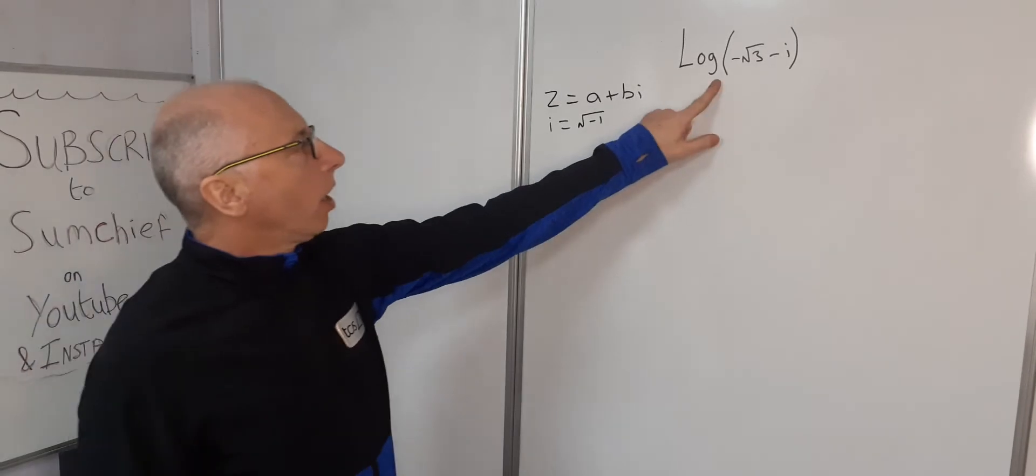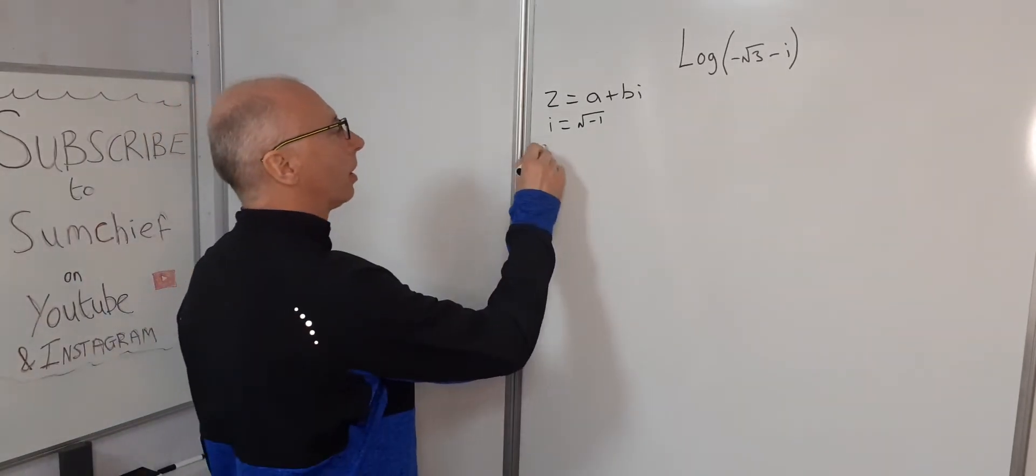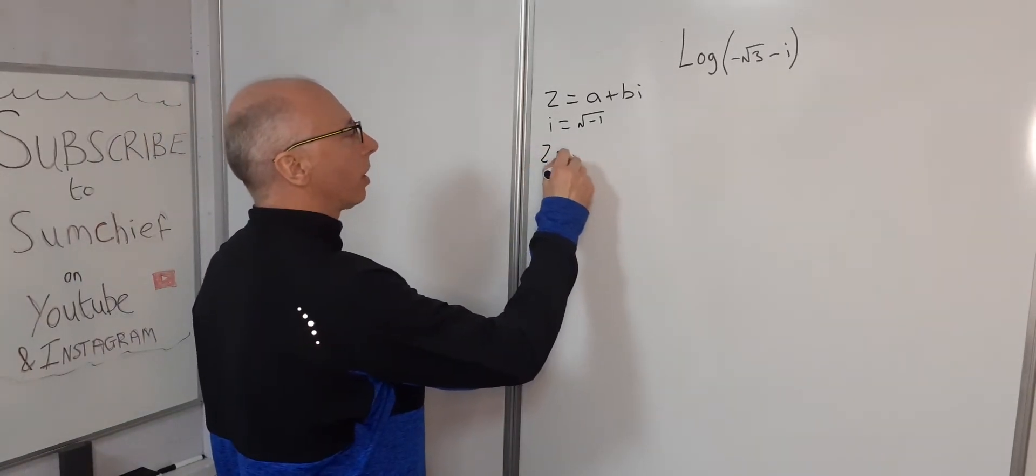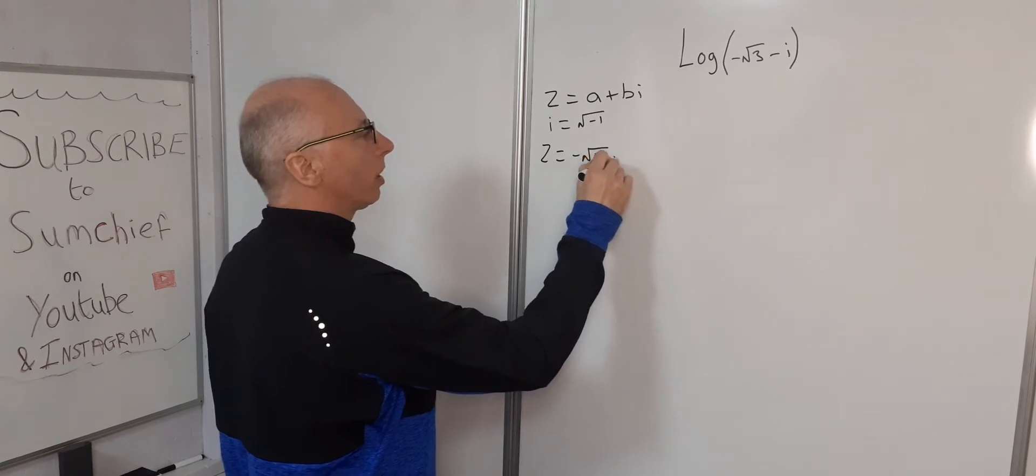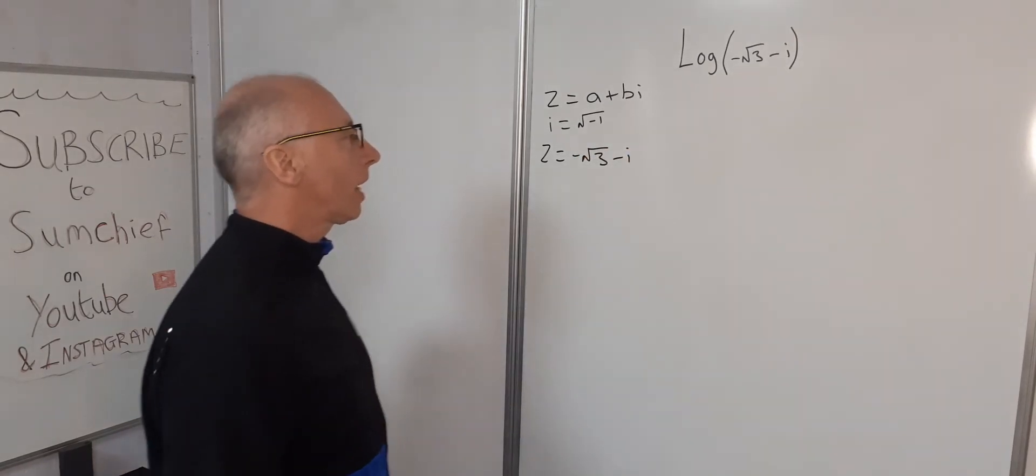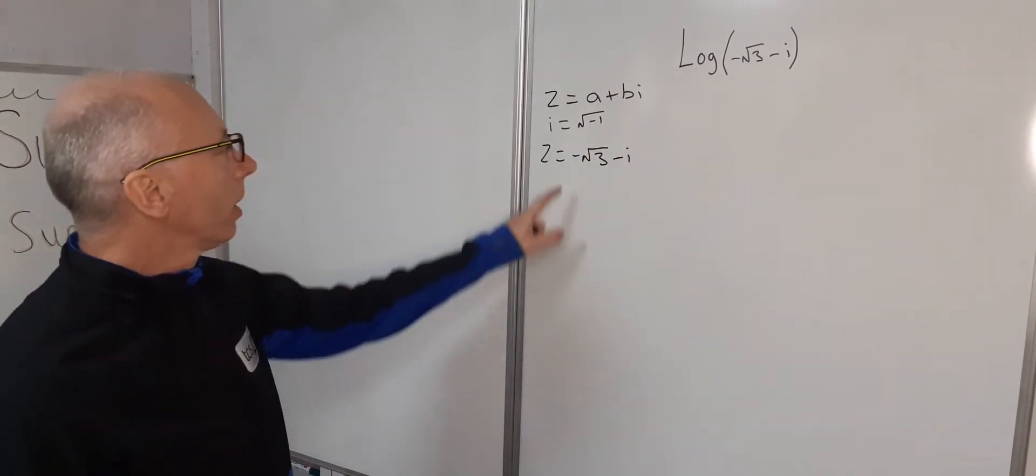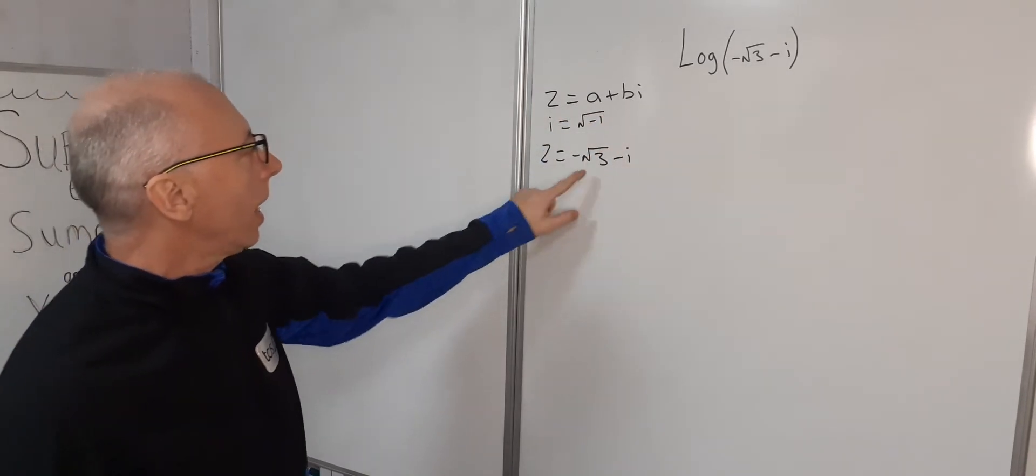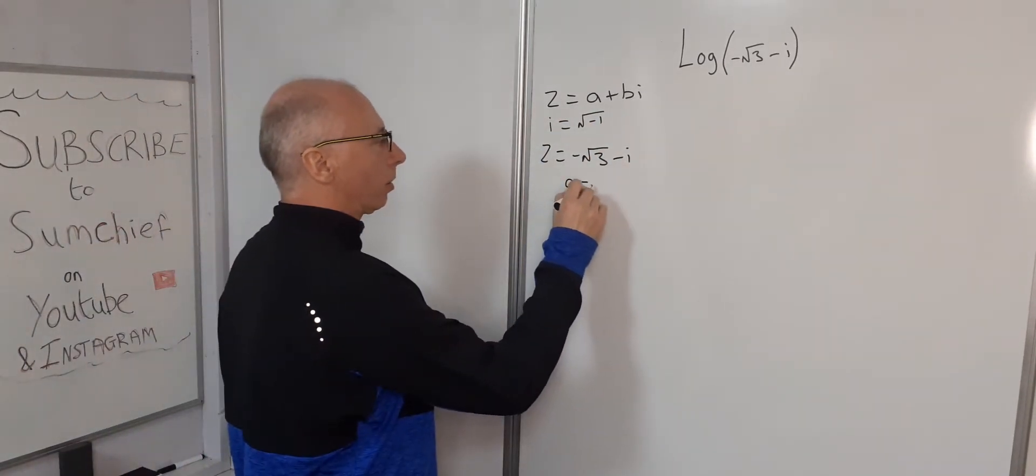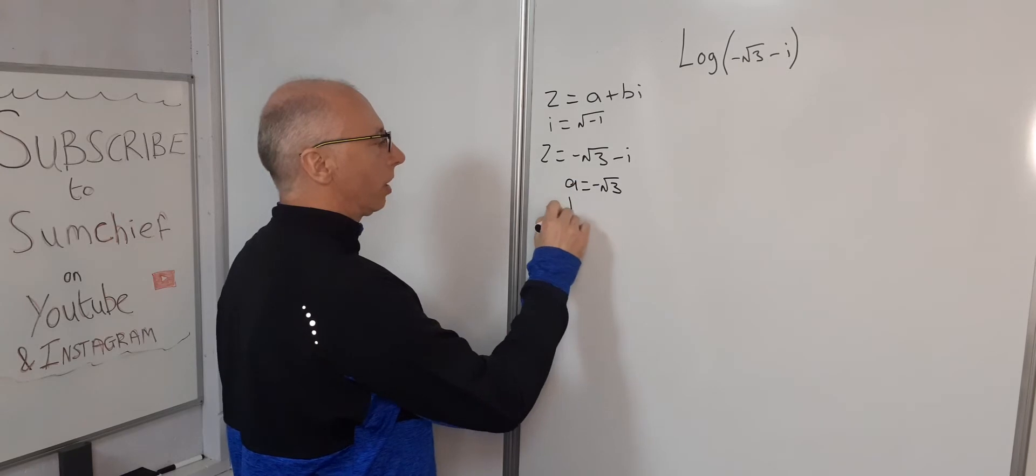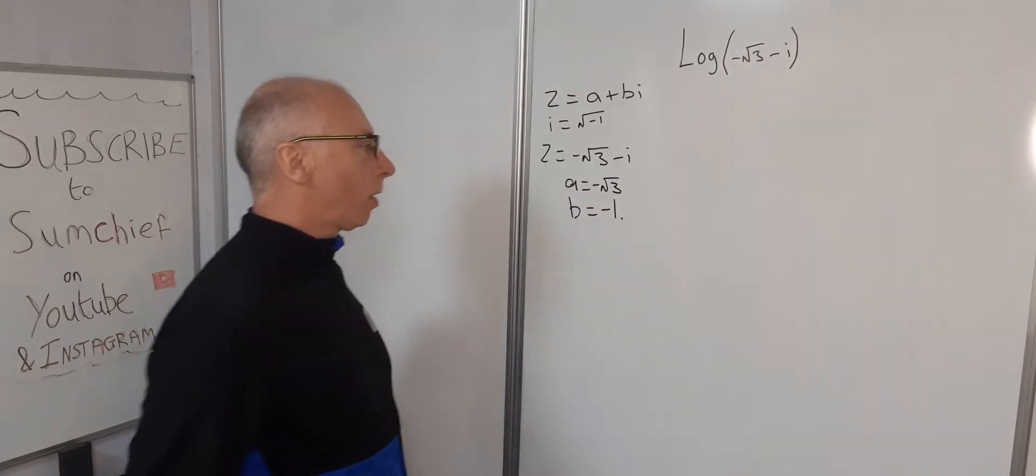Okay, our z here equals negative root 3 minus i. So that's our z. So from this here we can say that a equals negative square root of 3 and b equals negative 1.